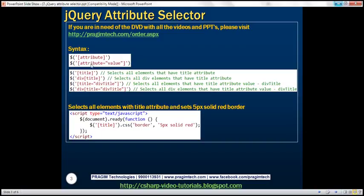If you want to find elements with a specific attribute and with a specific value for that attribute, you would use the second syntax. We have a few examples here. The first example finds all elements that have the title attribute. The second finds all div elements that have the title attribute. The third finds all elements with the title attribute with value 'div title'. And the last finds all div elements that have title attribute with value 'div title'.